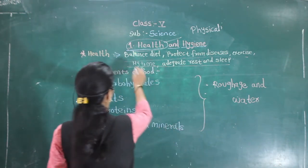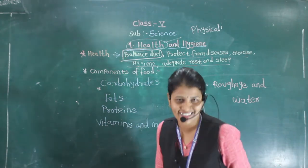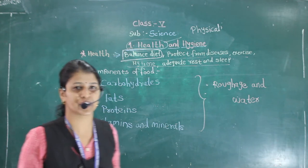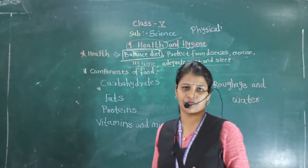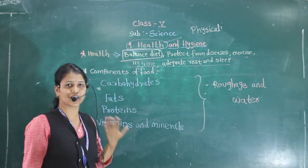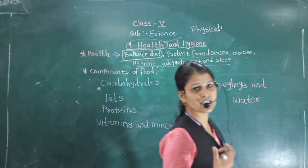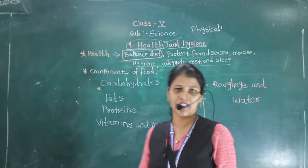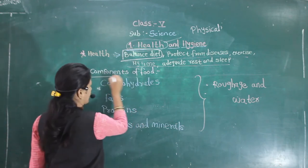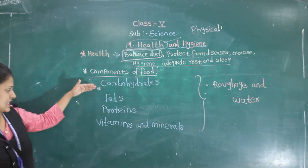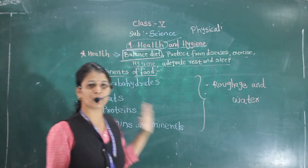First we are going to look at the proper balanced diet. To have a proper balanced diet means to have the right proportion of nutrients. What are nutrients? Nutrients are substances we get from different types of food — they are chemical substances which protect us from diseases. There are mainly five types of components of food: carbohydrates, fat, protein, vitamins, and minerals.